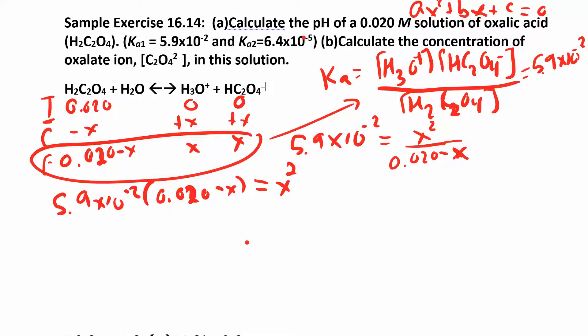Bring all the multiply these through and bring them over. So I multiply these through, I get 0.00118 minus 5.9 times 10 to the negative 2 x equals x squared. Then I'll bring these over, so I'll subtract this and add this side to both sides. I end up with x squared plus 5.9 times 10 to the negative 2 x minus 0.00118 equals 0.